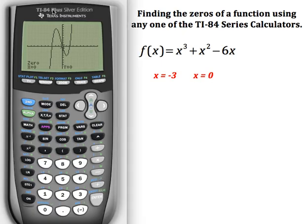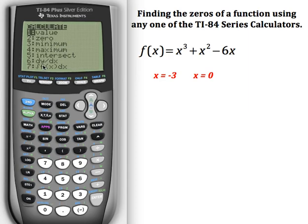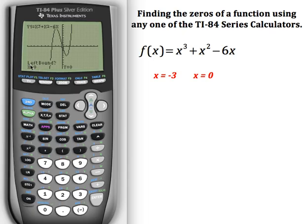I'm going to repeat the process one more time to find the third zero. I will hit second calc, my menu comes up, I press two for finding the zero, it's going to ask me for the left bound. I'm going to move over just a little bit closer to it. There's my left bound, I'm going to hit enter.